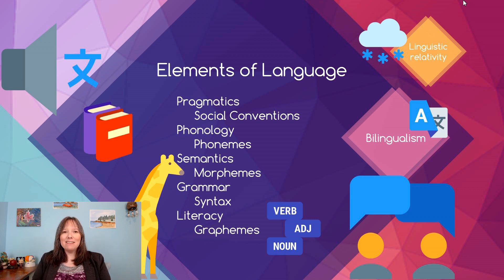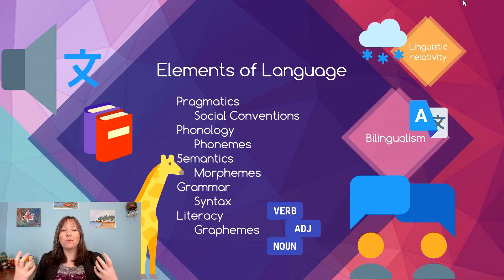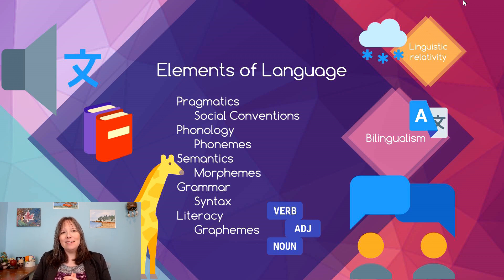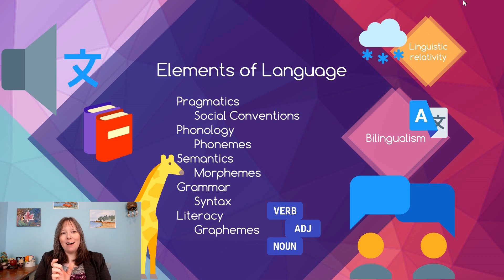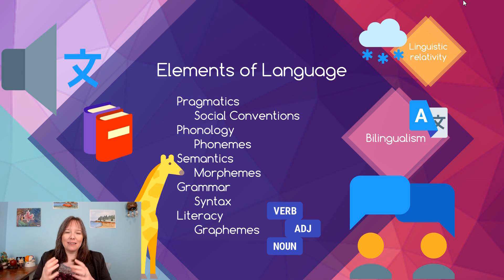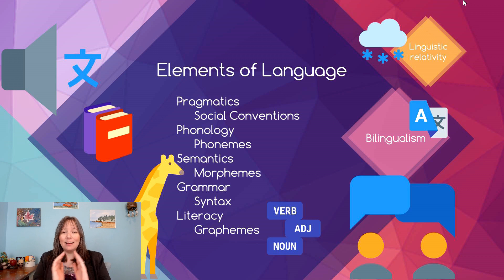Then we have the science of semantics. Semantics is the lexicon — the meaning of words. When you look up a word in the dictionary, you're not just looking at how to pronounce it, but what it means. So 'giraffe' is a mammal with a long neck. When we think about semantics, we can also think about morphemes — the smallest unit of meaning in language. The word 'cat' has only one morpheme. The word 'cats' with a plural 's' has two morphemes — 'cat' and the 's.' The 's' is the smallest unit of meaning because it shows the word is plural.